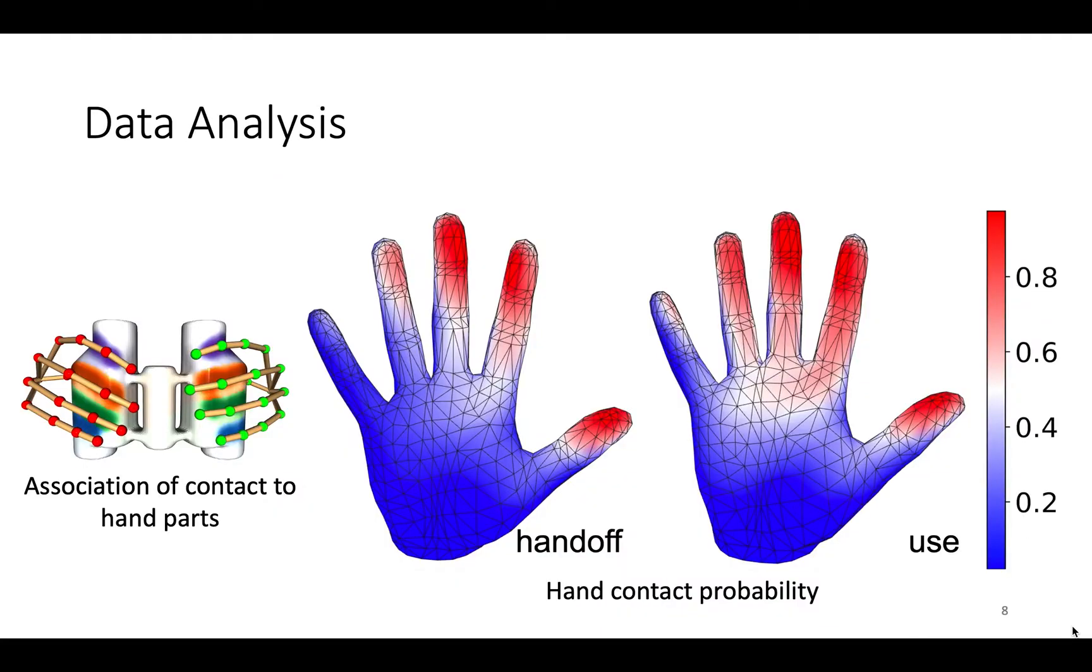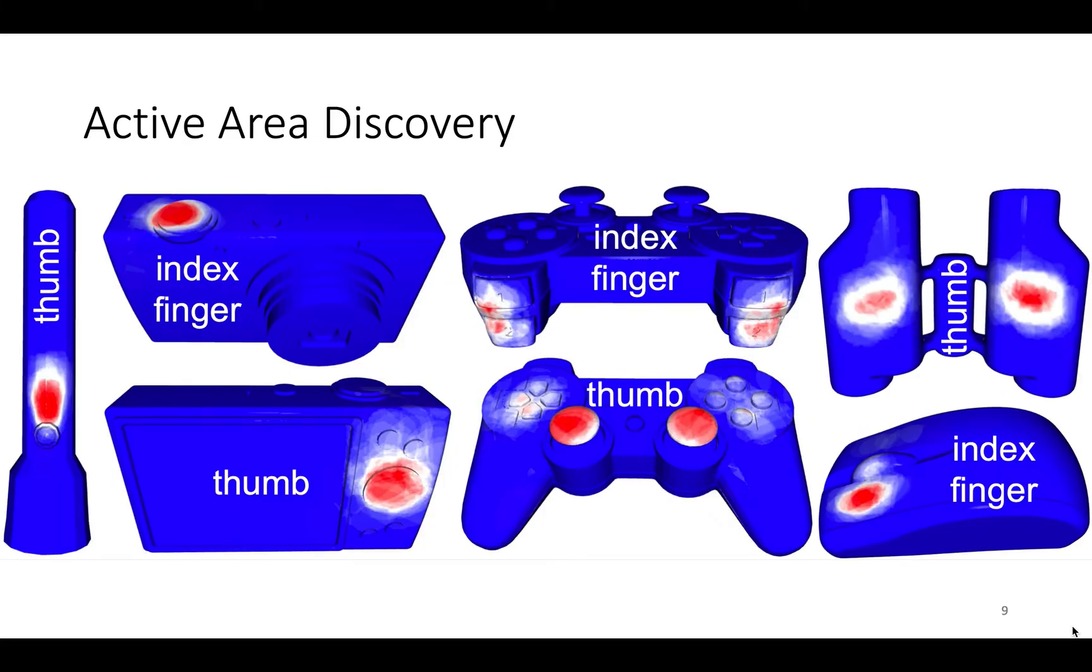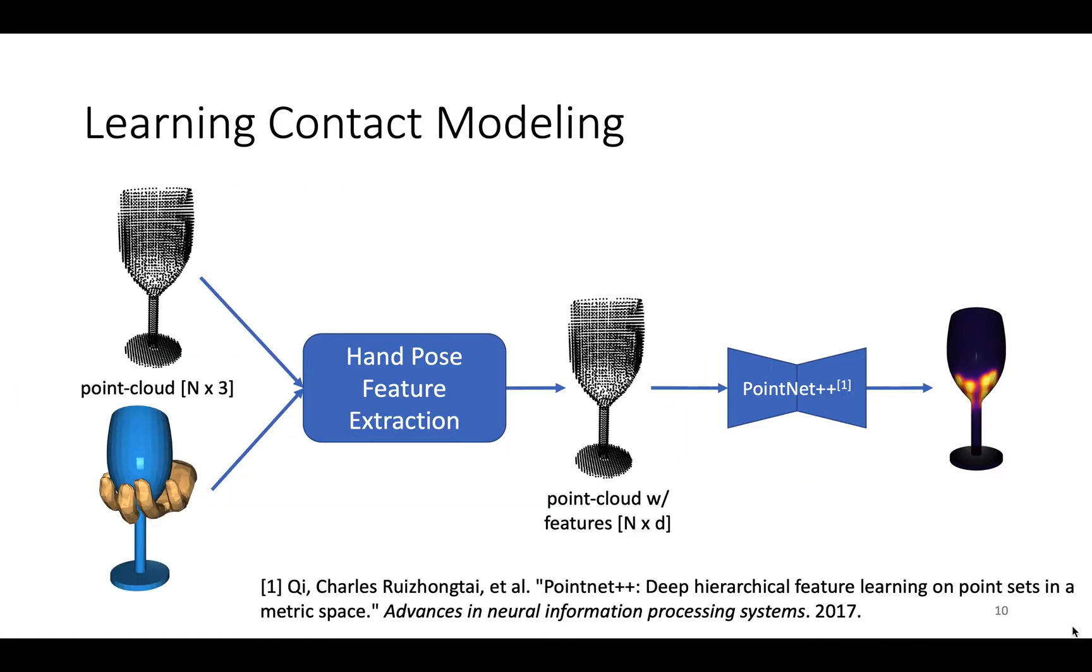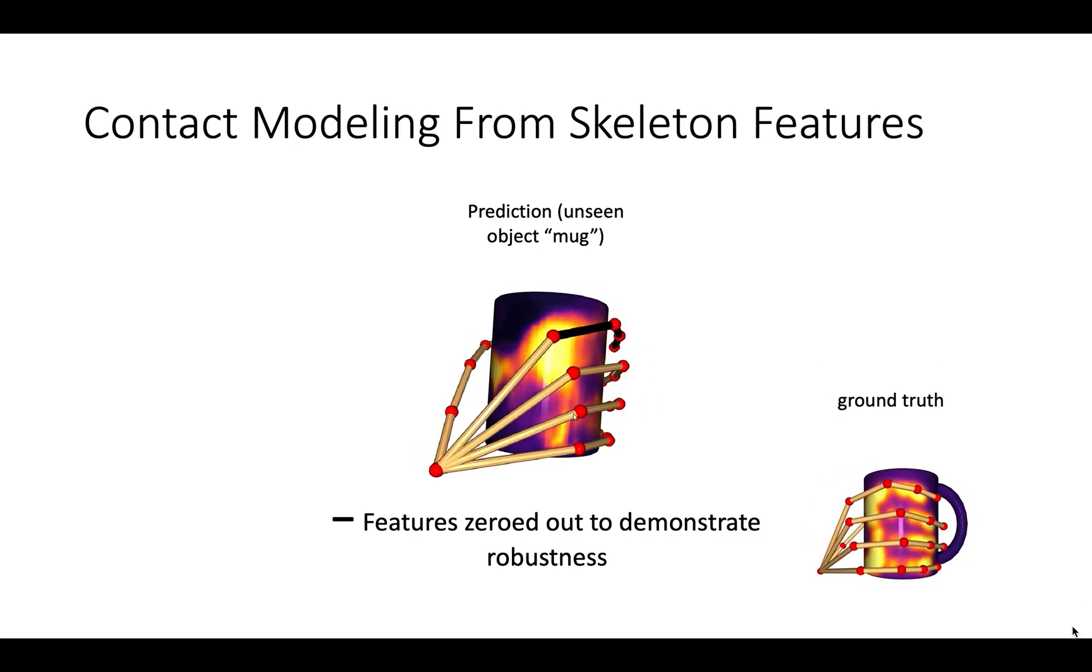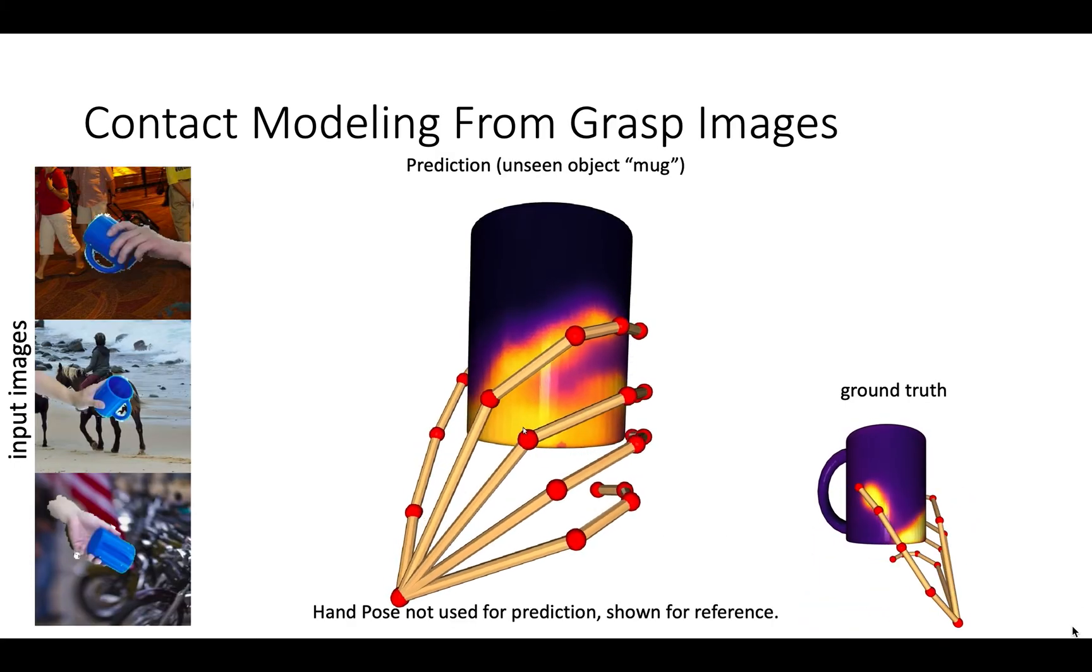We analyze this data to estimate hand contact probability and automatically discover high-touch object areas. We also use this data to learn contact modeling. Here's an example contact prediction from the hand skeleton and from grasp images.